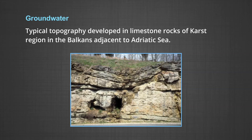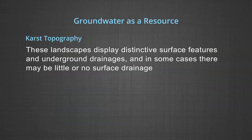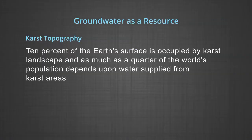Named after the typical topography developed in limestone rocks of the karst region in the Balkans adjacent to the Adriatic Sea. Karst topography is a three-dimensional landscape shaped by the dissolution of a soluble layer or layers of bedrock, usually carbonate rocks such as limestone or dolomite. These landscapes display distinctive surface features and underground drainage, and in some cases there may be little or no surface drainage. Understanding karst region is important because 10 percent of the earth's surface is occupied by karst landscape and as much as a quarter of the world's population depends upon water supplied from the karst areas.